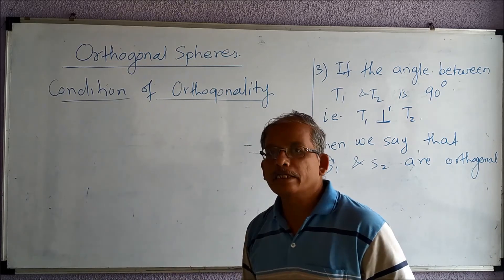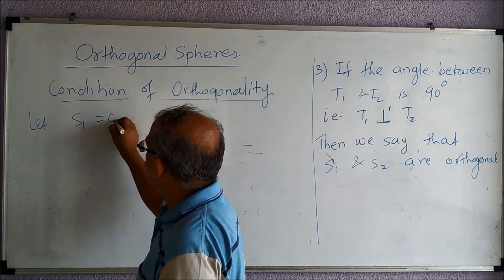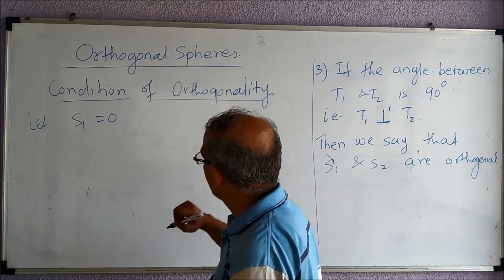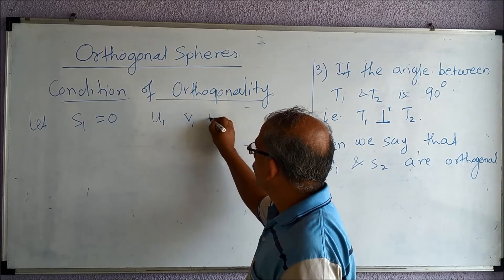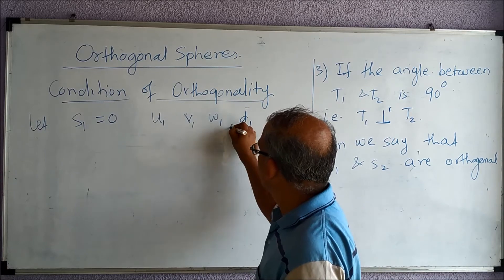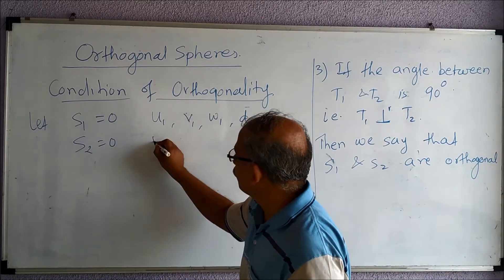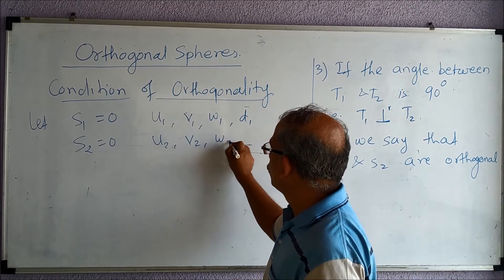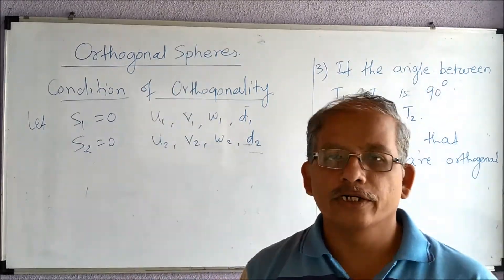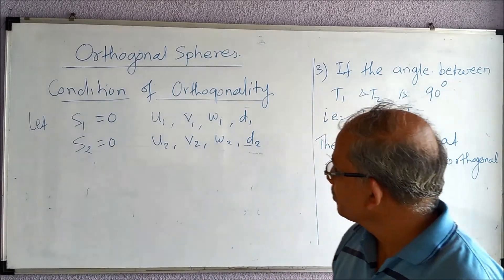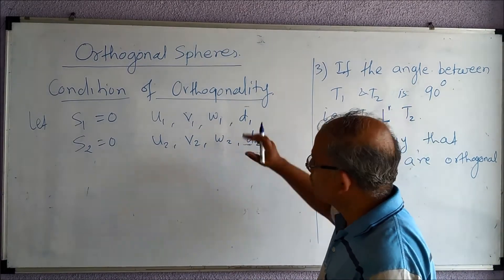Let s1 = 0 be one sphere. For this sphere, we will calculate u1, v1, w1, d1 as usual. Then s2 = 0, for this we will calculate u2, v2, w2, and d2. We know how to calculate this by comparing with the standard form of second order equation.